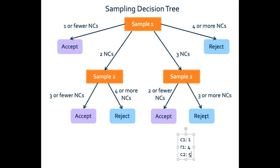That's our decision tree for this particular instance — if you change your accept and reject criteria your decision tree will change, so keep that in mind if you're working on a different sampling plan. Before heading to Excel, we need to understand why we care about these accept/reject decisions and what this has to do with probability of acceptance. When you have two sampling instances, you have more than one place where you can accept a lot. Each of these three accept decisions has a different probability, and when making your combined OC curve you need to add those probabilities together to get your overall probability of acceptance.